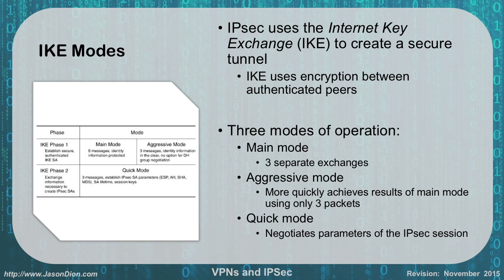IPsec uses what's called the Internet Key Exchange, or IKE, to create the secure tunnel. IKE uses encryption between two authenticated peers, and we have three different modes of Internet Key Exchange: main mode, which uses three separate exchanges; aggressive mode, which more quickly achieves these results using only three packets; and then quick mode, which negotiates the parameters of the IPsec session itself.